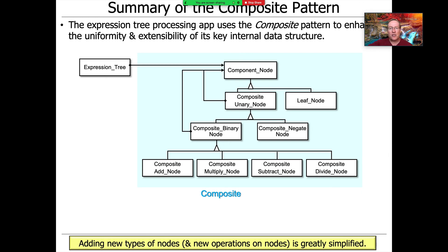To summarize our discussion of the composite tree, this uses the expression tree use of composite. We use this pattern to enhance the uniformity and extensibility of the key internal data structure of the tree. And as you can see here, it is a very nice recursive structure, which maps on to the expression tree itself. And the virtue of all this stuff is we can add new nodes and new operations on nodes without breaking what's there. And that's why it's such a valuable pattern.